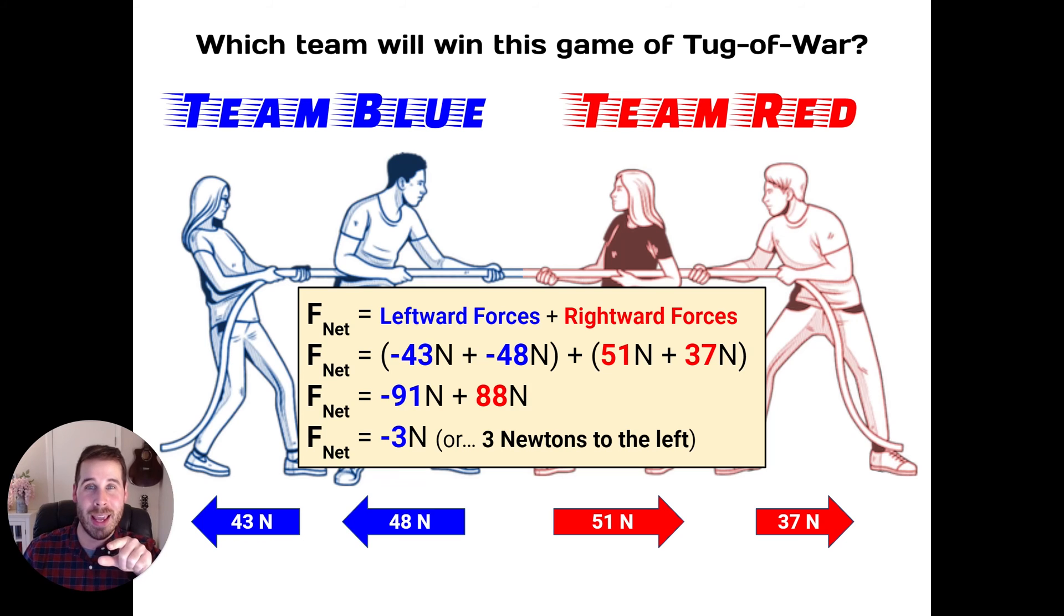Here's our work. The net force is going to be equal to, and hey, check this out. I'm actually doing my math a little bit differently this time, because I mentioned before, it doesn't really matter how you put these numbers together as long as you're doing it consistently and in a way where you're mindful about direction. So I'm doing things a little differently here. I'm saying the net force is going to be all the leftward forces from team blue plus all the rightward forces from team red. So the leftward forces are negative 43 from the woman on the left and negative 48 from the man on the left. I'm making those numbers negative, and that means that negative is the leftward direction. That's the way I'm organizing it in this case. That's how I'm showing direction is with that negative number.